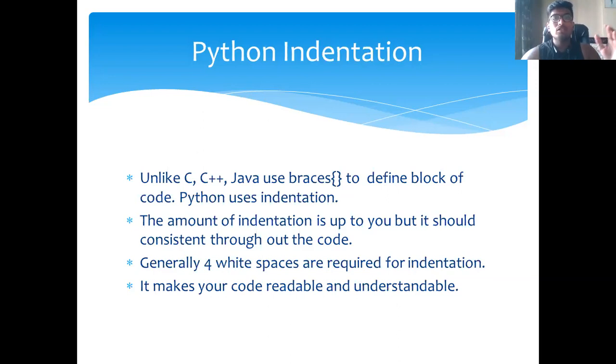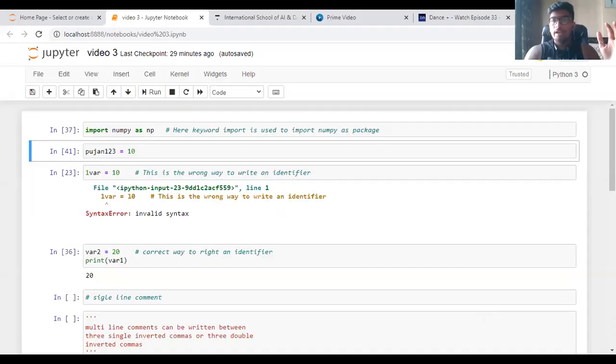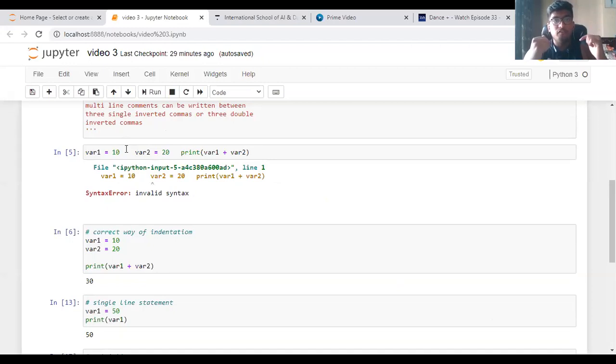Generally for indentation we use four white spaces or four spaces. The most important thing of indentation is that it makes your code readable and understandable. Let me show you how indentation works. See, I have written the same code in two different ways. Here I have written var1 equals 10, var2 equals 20, and then I'm trying to add both, but it's showing a syntax error. Whereas when I have indented it like var1 equals 10, then entered, then var2 equals 20, then on the third line print its value, then it's running properly. So indentation is the way of presentation and making a code readable to yourself as well as to the one you are presenting.